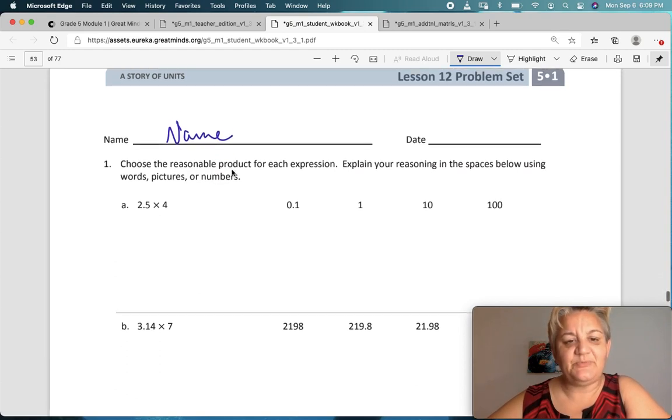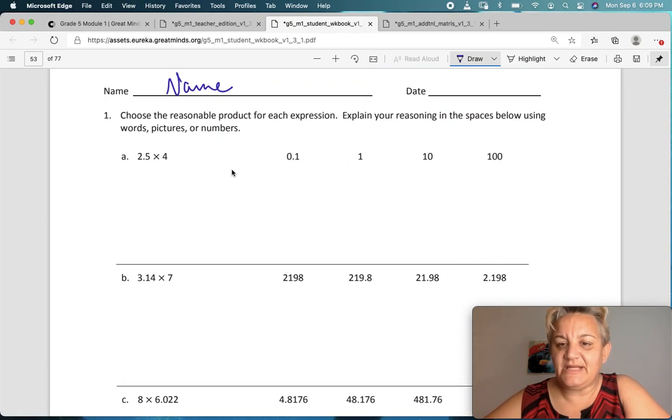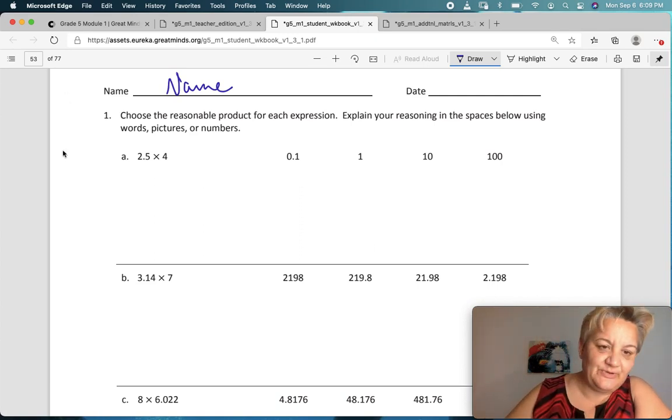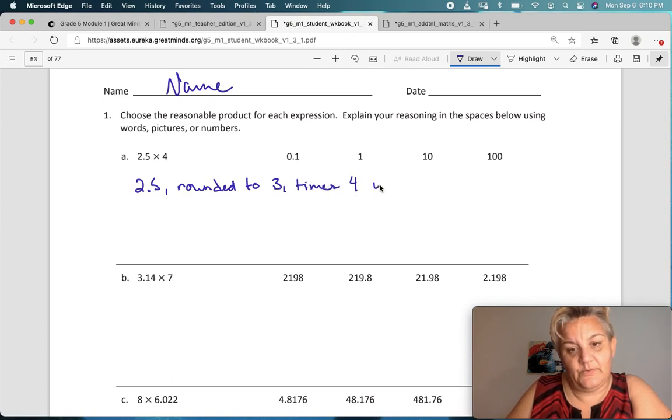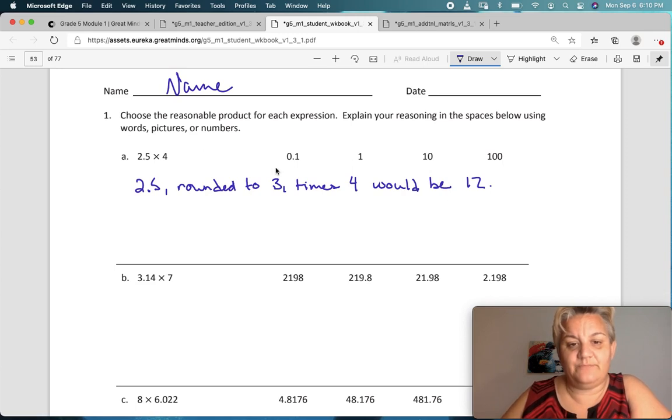Number one, choose the reasonable product for each expression. Explain your reasoning in the spaces below using words, pictures, or numbers. So we have 2.5 here. Using words, 2.5 rounded to 3 times 4 would be what, 3 times 4 is 12, right? So, do you think 0.1 is close to 12, or 1 is close to 12, or 10 is close to 12, or 100 is close to 12? Well, using estimation, we can say that 10 is the closest to 12.